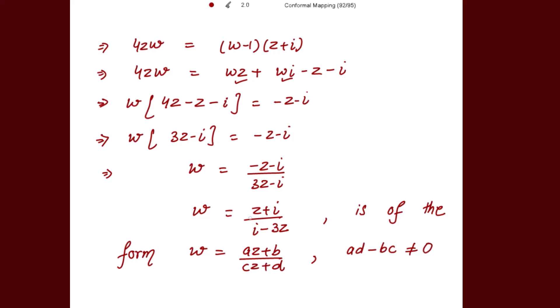Checking the condition ad - bc ≠ 0: here a = 1, d = -3, b = i, c = i. So ad - bc = (1)(-3) - (i)(i) = -3 - i² = -3 + 1 = -2, which is non-zero.